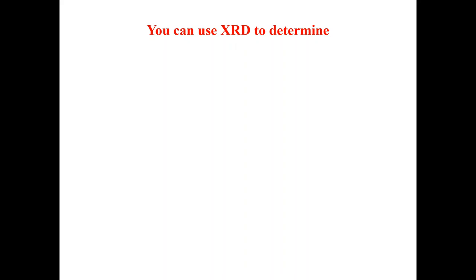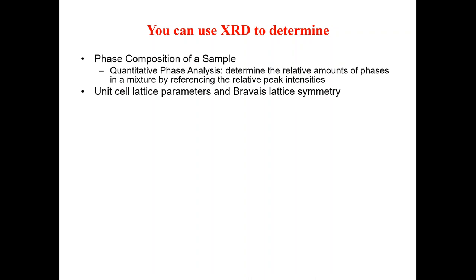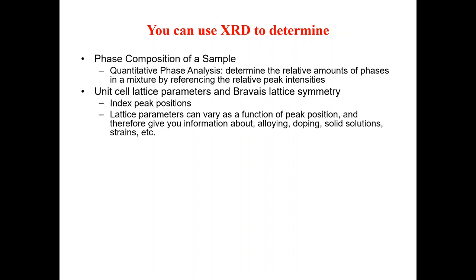The first question that comes to mind when someone wants to do XRD analysis is: what kind of information can we get from XRD? You can use XRD to determine the phase composition of a sample — meaning we can do quantitative phase analysis to determine the relative amount of phases in a mixture by referencing relative peak intensities. We can also get information about unit cell lattice parameters and Bravais lattice symmetry by indexing peak positions.